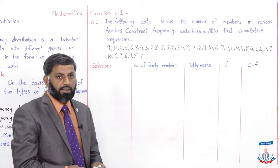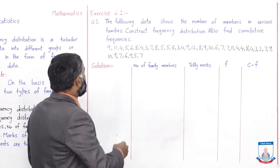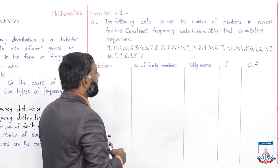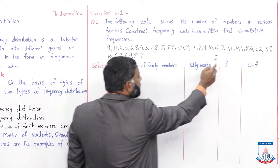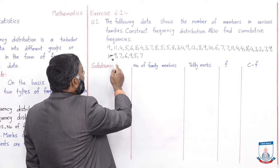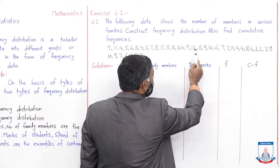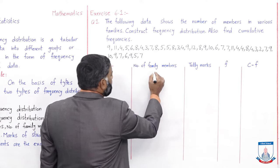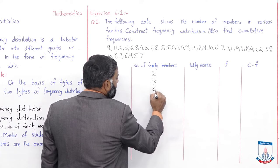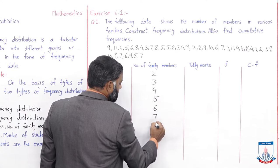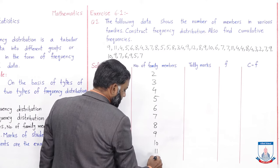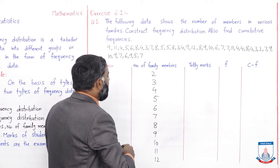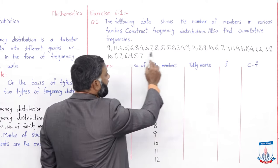جب بھی آپ کو discrete variable given ہوگا تو سب سے پہلے smallest اور largest value check کریں۔ اس data میں minimum value 2 ہے اور maximum value 12 ہے۔ Minimum value 2 سے maximum value 12 تک تمام values لکھ لیں — اس data میں ان کے علاوہ number of family members possible نہیں ہیں۔ یہ ungroup data ہے جسے اب frequency distribution میں convert کریں گے۔